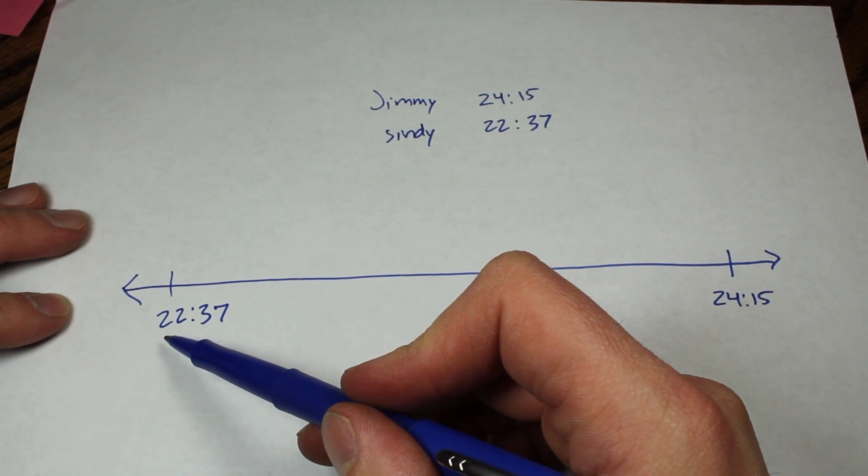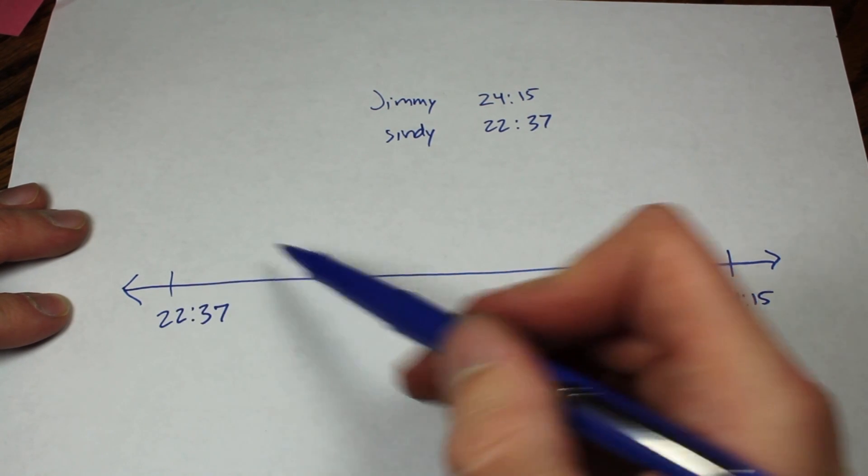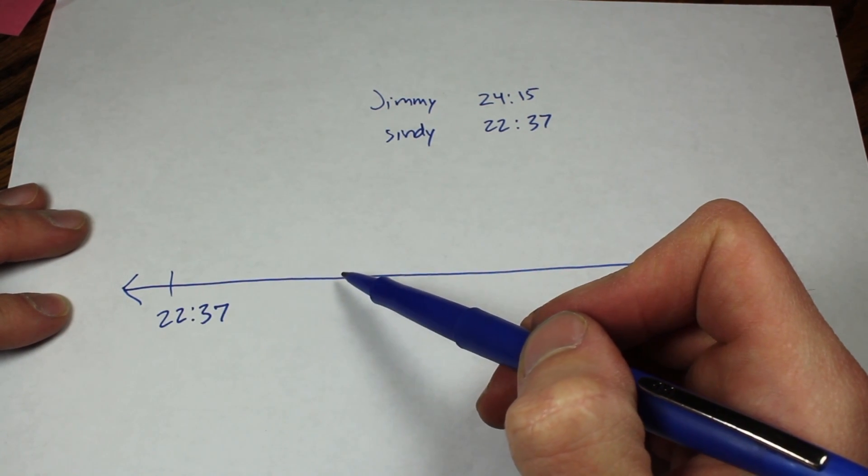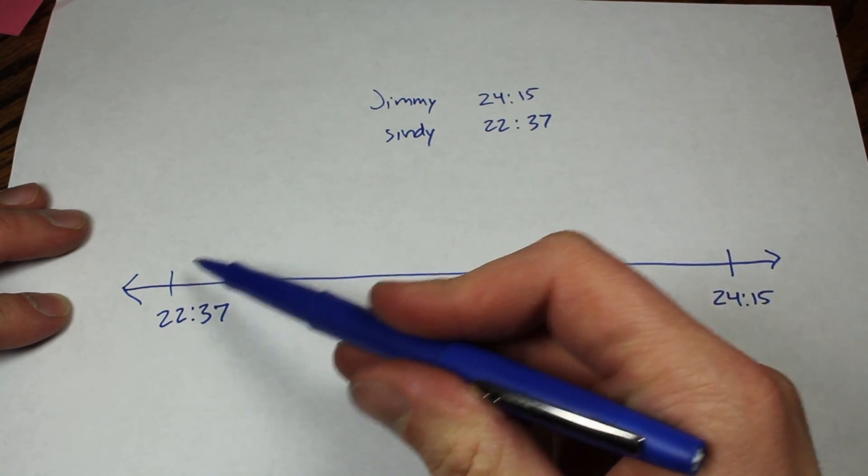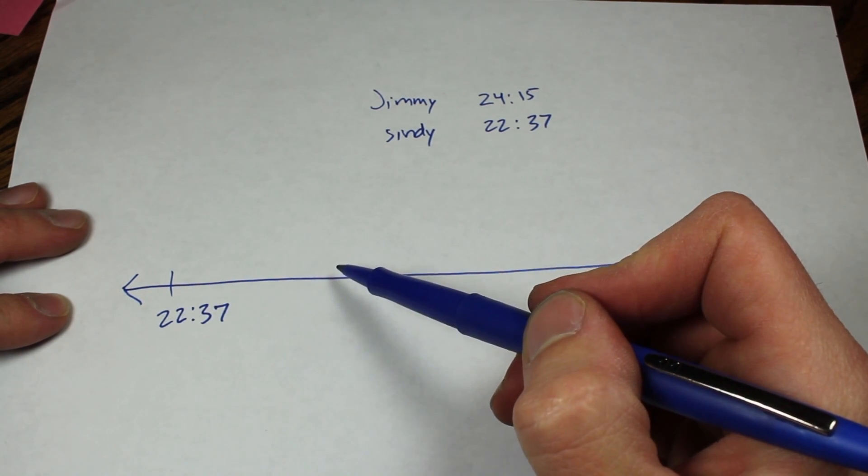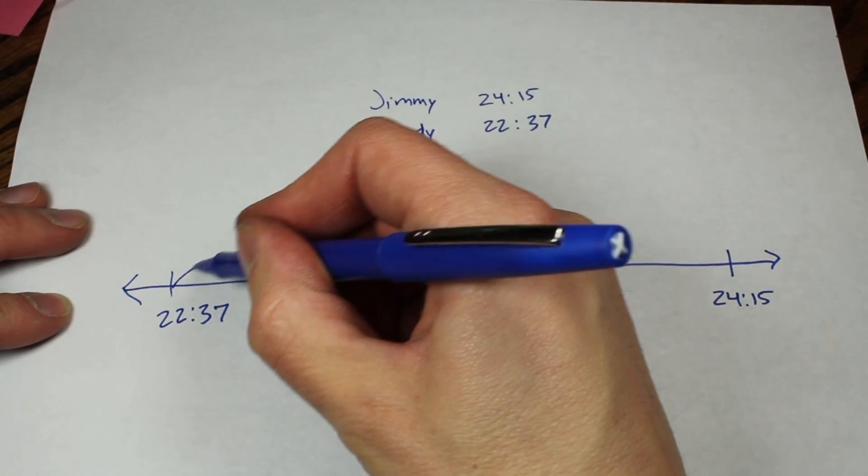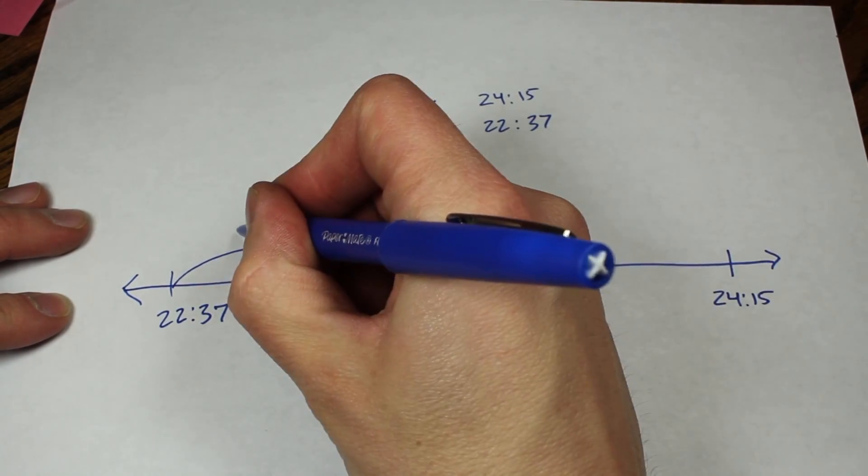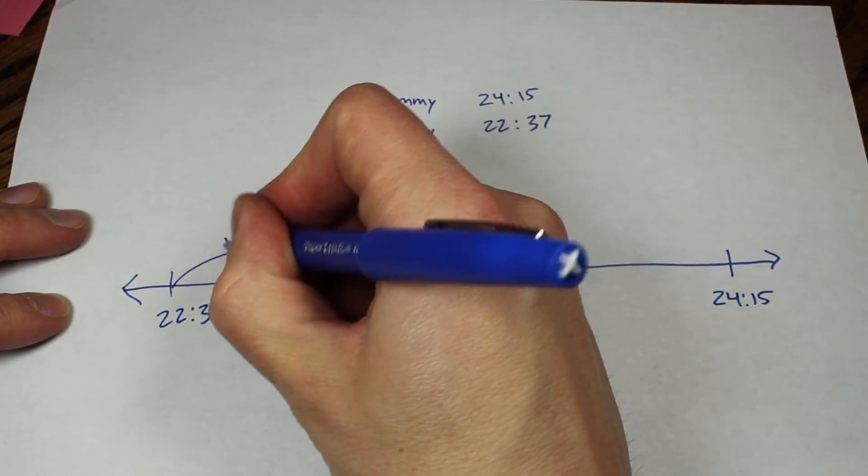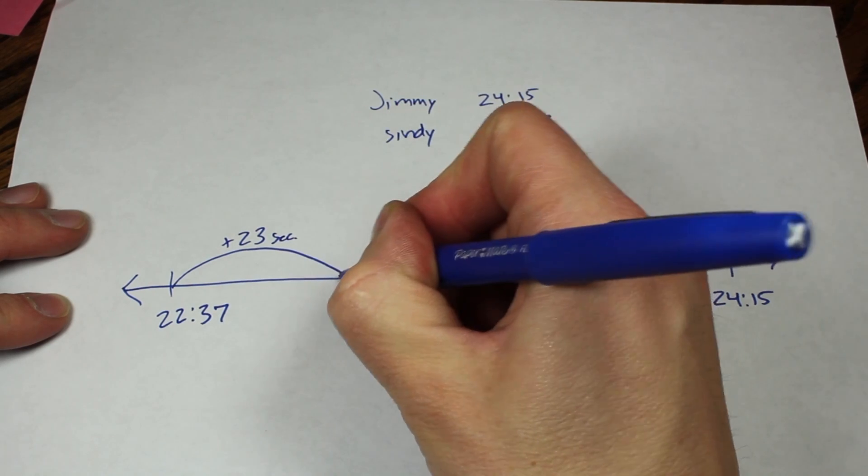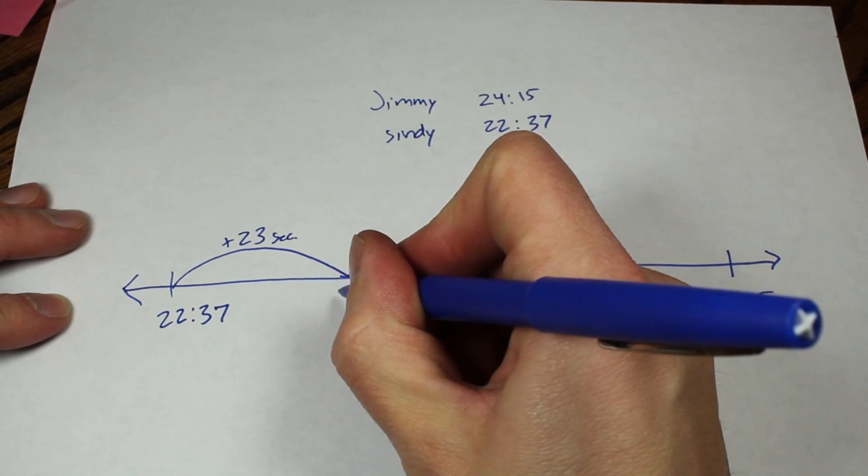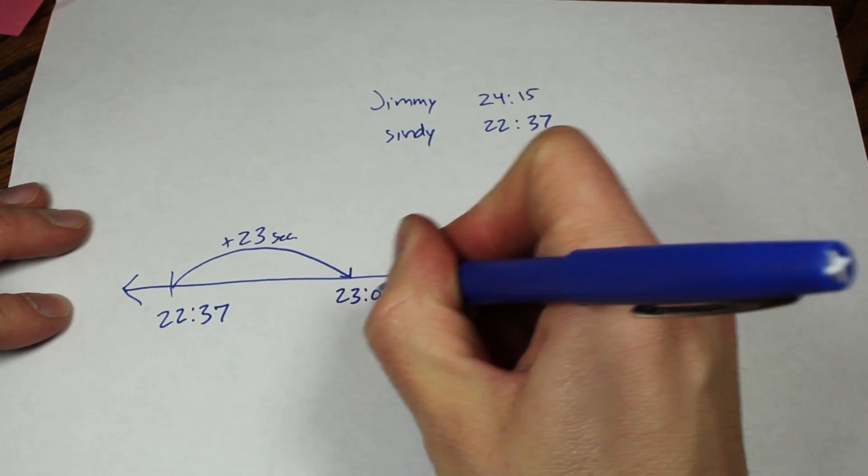So if we start at 22 minutes and 37 seconds, we want to get to the next round minute, which would be 23 minutes. So how many seconds would I need to add to get to 23 minutes? I would need to add 23 seconds, and that would get me to 23 minutes.